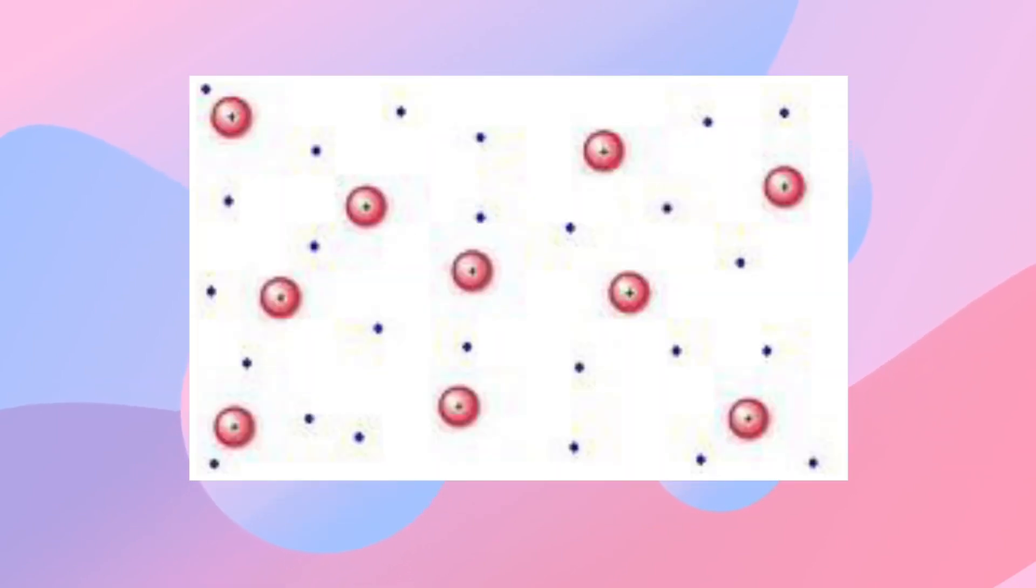Plasma, like a gas, has no fixed shape or volume. It is made up of atoms with little to no electrons, as well as free-flowing ions.